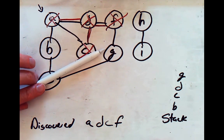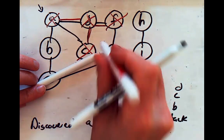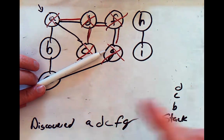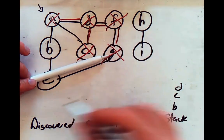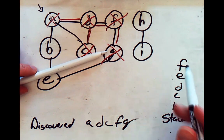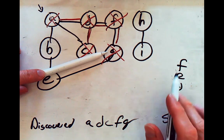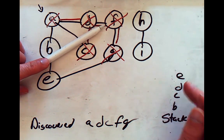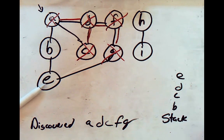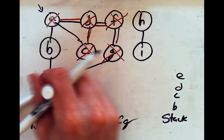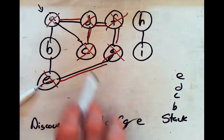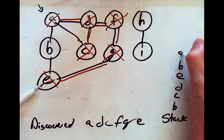We repeat the process: pop G off the stack. G hasn't been visited, so we cross it out, add it to the list, and push everything it's connected to — E and F — onto the stack. Then we pop F off; it's already been discovered, so nothing to do. Then we pop E off the stack. It hasn't been discovered or visited, so we cross it off, highlight the connection, and add it to the end of the list. We process its outgoing nodes: it's connected to B and G.